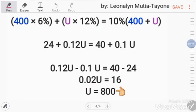Another way, let's convert to decimal. So, this becomes 0.06. This becomes 0.12. And this becomes 0.1.